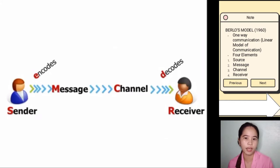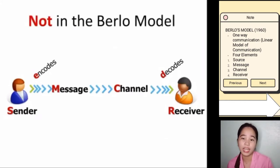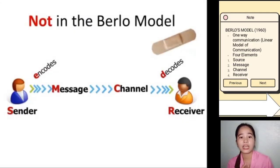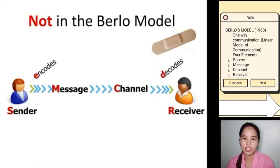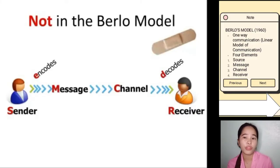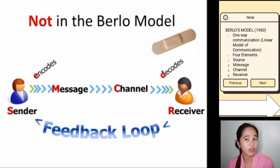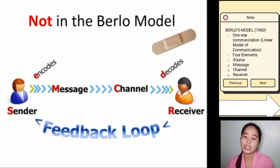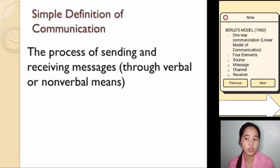Scholars recognized that something was obviously missing from this model, so they added what you might call a band-aid. The receiver can then send information back to the sender — the receiver encodes a message and sends something back, and that's called the feedback loop. However, that is not in the original Berlo's model of communication. This leads us to a simple definition of communication: the process of sending and receiving messages.